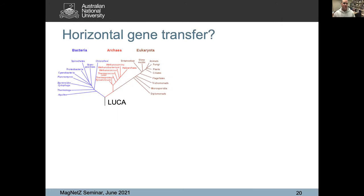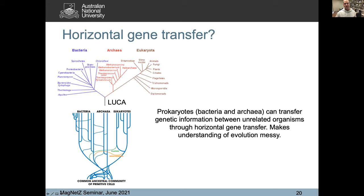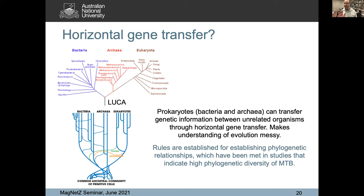One of the problems I've started reading about and find really interesting is horizontal gene transfer (HGT). Most of us are probably used to thinking about biology as a tree of life where there's vertical inheritance of DNA and evolution happens vertically from the last universal common ancestor. But horizontal gene transfer says that particularly prokaryotes can transfer genetic information horizontally — unrelated organisms can transfer genetic material through this HGT mechanism. This makes understanding evolution messy, but there are rules put around this and all the work being done meets those rules. I'm a paleomagnetist, but I'm inclined to think it's real for lots of reasons.